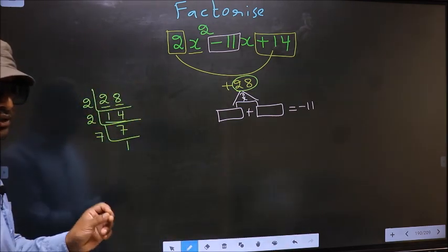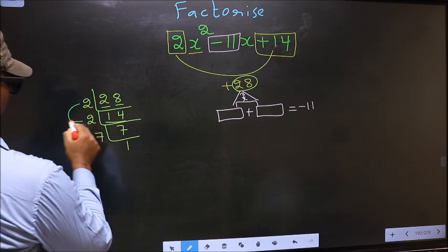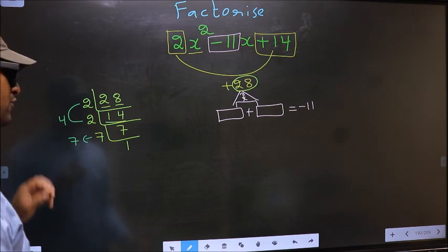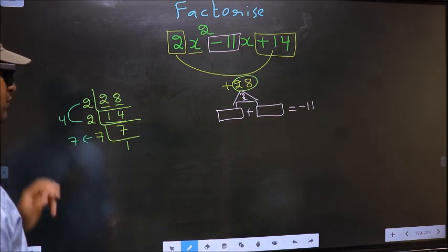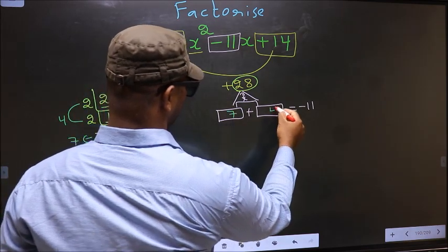Now the two numbers should be 2 into 2, which is 4, and the second number is 7. 7 plus 4 is 11, 7 into 4 is 28. So here you write 7 and here 4.